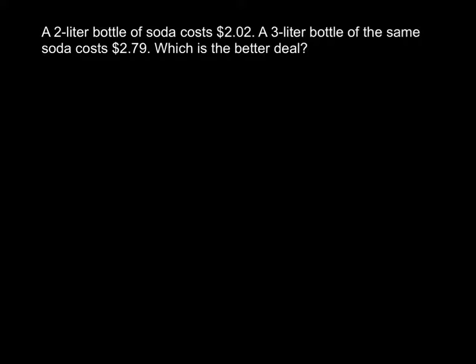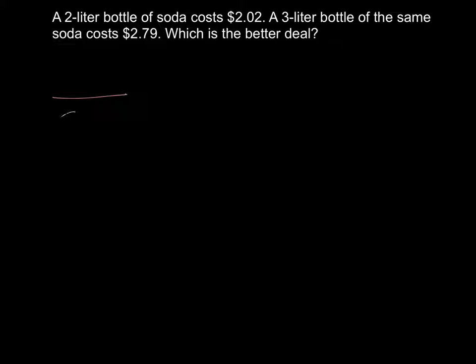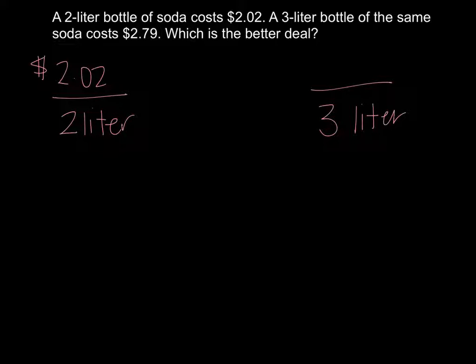All right, so I have a 2-liter bottle of soda here, and that 2-liter bottle of soda is going to cost me $2.02. And then I have a 3-liter bottle of soda, and that's going to cost me $2.79. So when you go to the store you'd see well the 3-liter bottle of soda costs more money. But we're going to look at how much does one liter cost to figure out which one has the better value, the better deal for us.